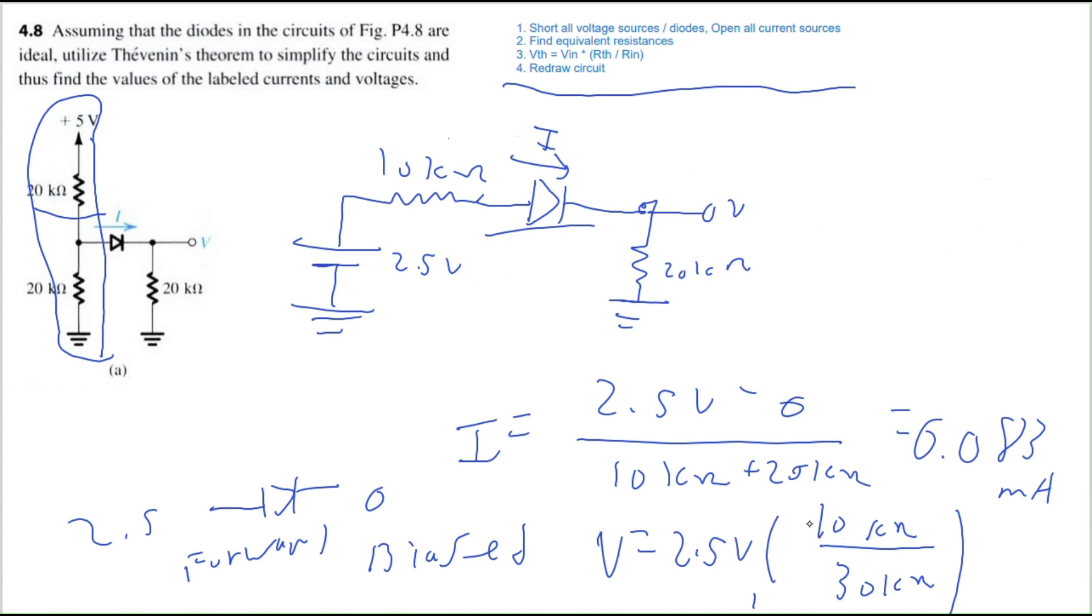Wait, I'm sorry, this should be 20. You want it to be the resistance observed by the 20 kilo ohms. This 10 kilo ohms will take some voltage and the remainder will be taken by the 20 kilo ohms. And that gives us 1.67 volts.